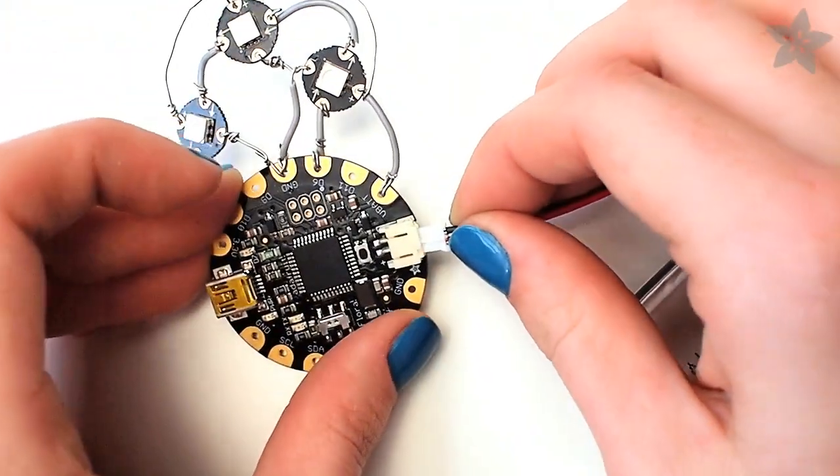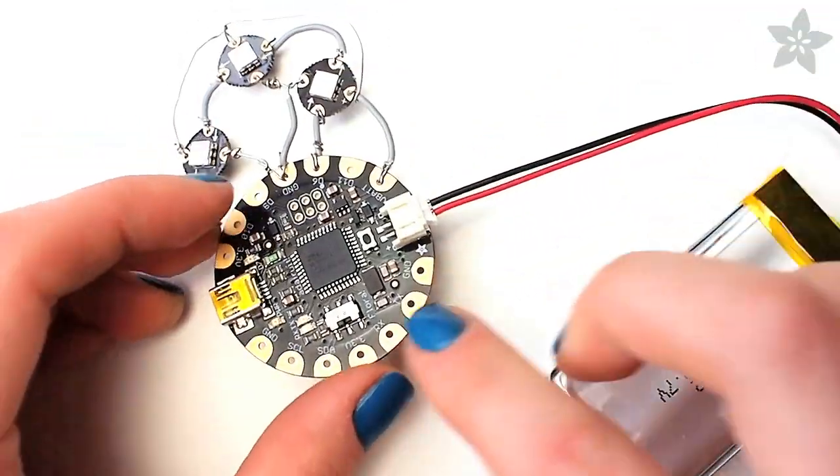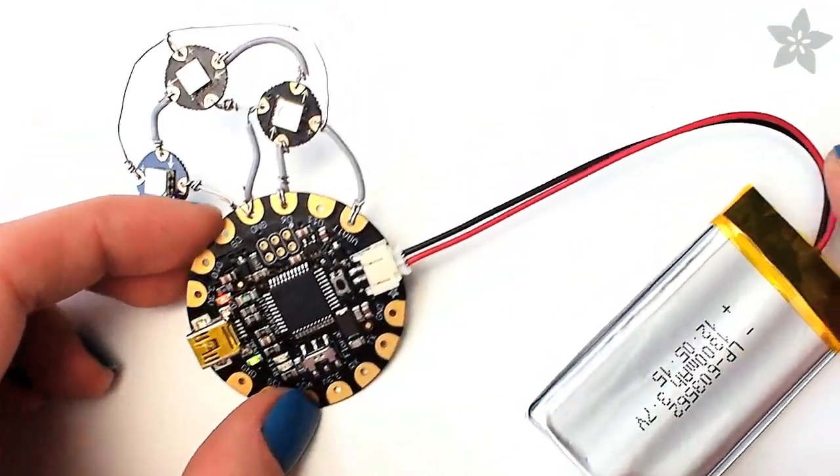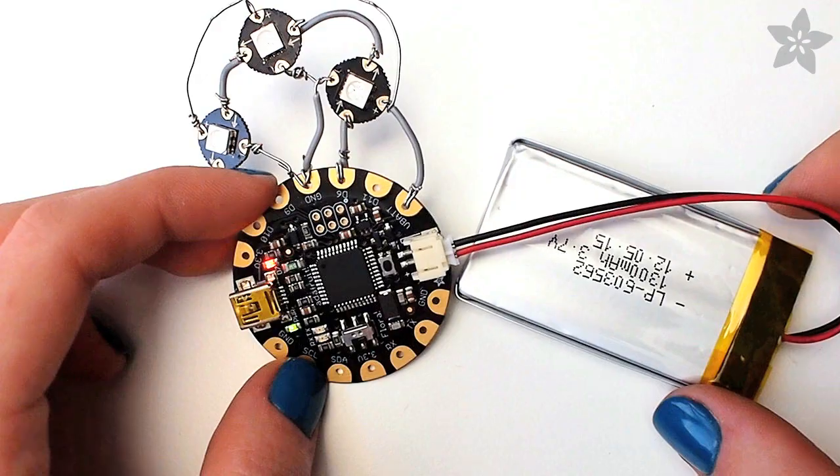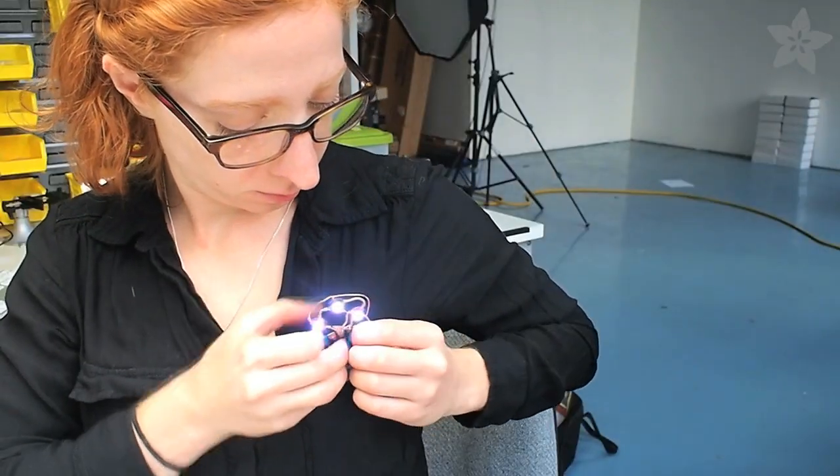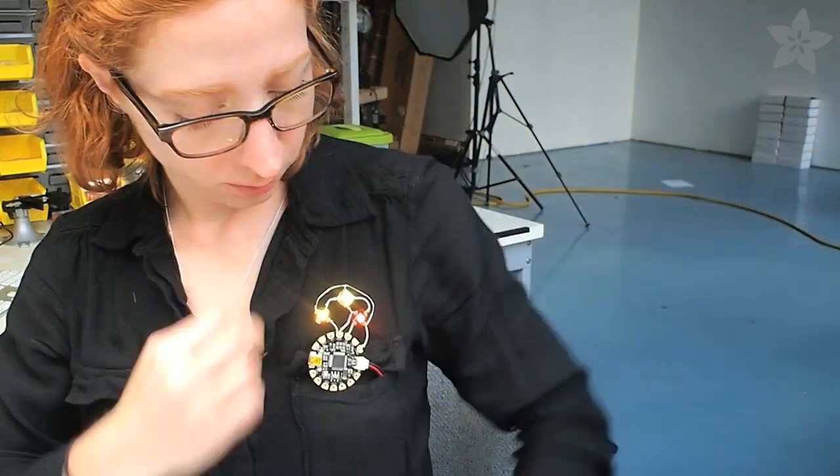They have some extra safety concerns that you should read about in the project documentation but they certainly are lighter, smaller, and will hold a charge for longer. Just slide the battery into your pocket and use the pin back to attach it to your garment.